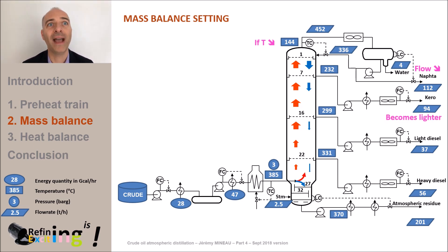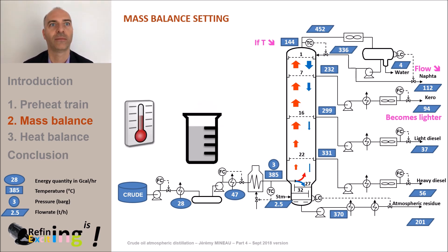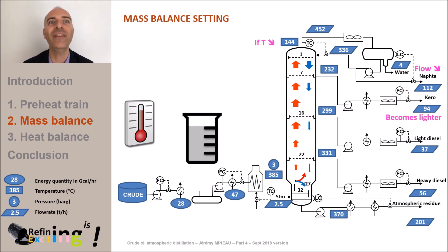This will have an impact on the flashpoint of the kerosene cut. As a reminder, the flashpoint is the minimum temperature at which a hydrocarbon cut ignites in the presence of a source of ignition. It is a property essentially related to safety. A high flashpoint objective ensures that this cut will not ignite even in the presence of a source of ignition.